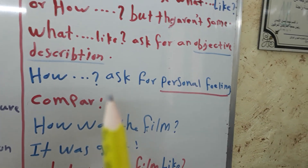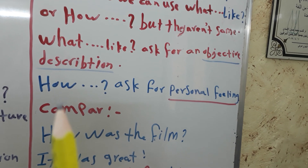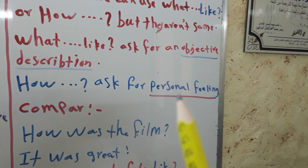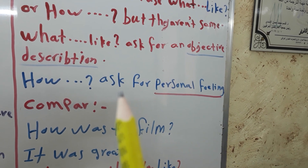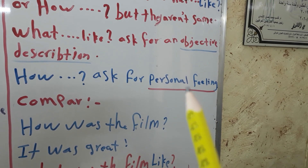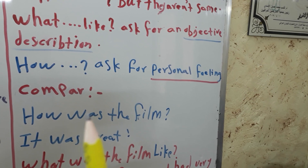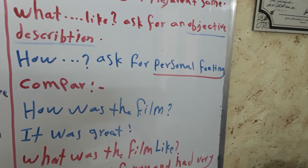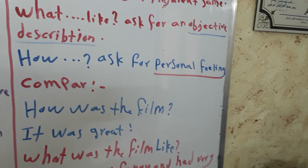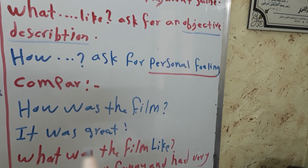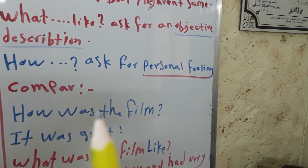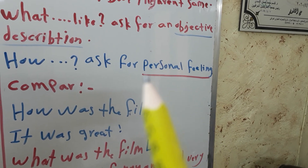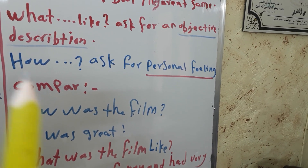But if we use 'how', it asks for personal feeling. For example: 'How was the film?' — The answer: 'It was great.' Here the speaker asked about a personal feeling by using 'how'.